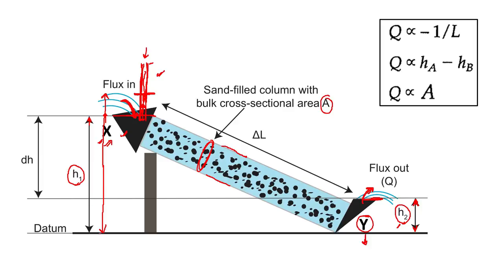This would be the head at location X. The height is measured from a common datum. At point X, the head H1 is shown here — the water level in the inserted pipe. It can be at any level depending upon the head, that is the energy of water. The water could even go in the opposite direction if you apply some force or pressure from the Y point.